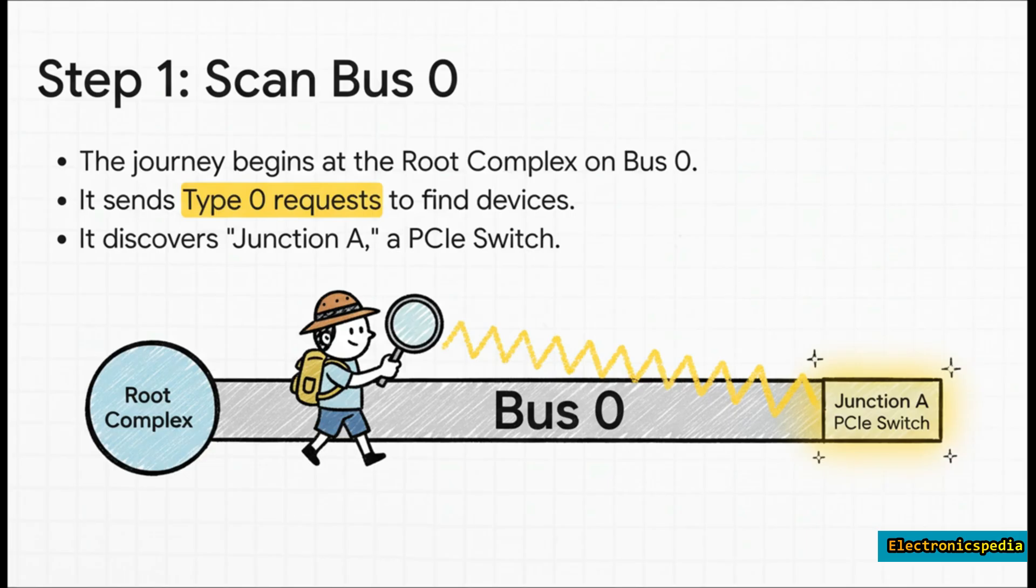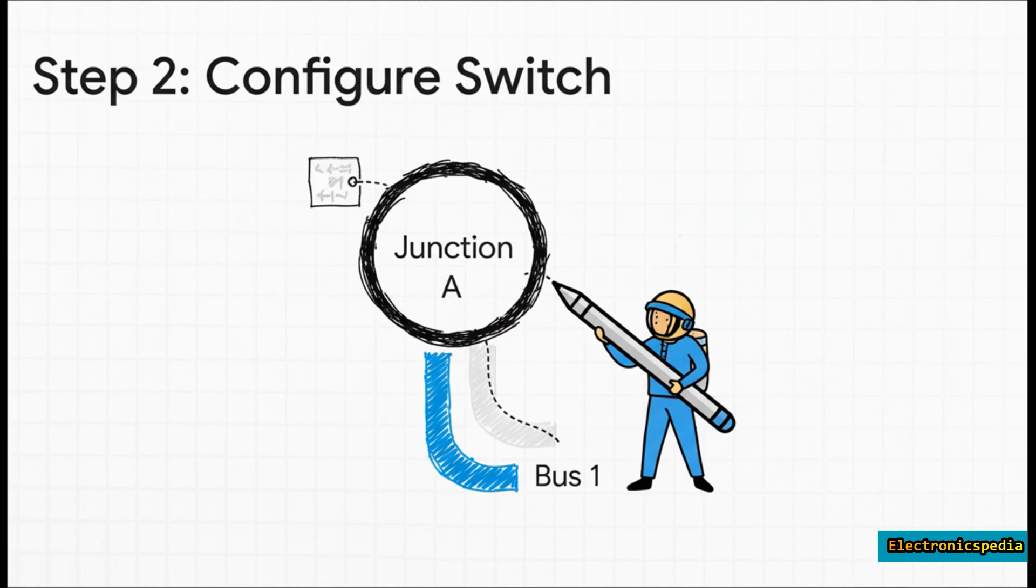After a few tries, it gets a response. It's found Junction A, and it learns that it's a PCI switch, a bridge to other places. Now this is where it gets really clever. The explorer doesn't just find the switch, it actively programs it.